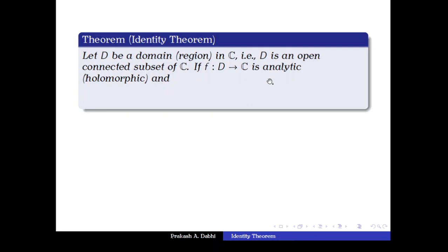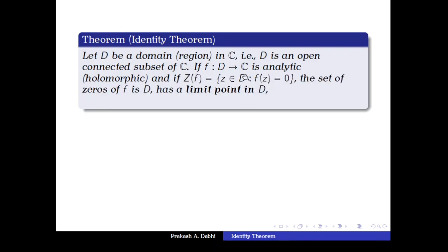If f from D to ℂ is analytic, and if Z_f — the set of zeros of f, meaning the set of all z in D such that f(z) = 0 — has a limit point in D, then the theorem says that the function is identically zero, meaning f(z) = 0 for all z in D.